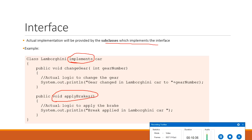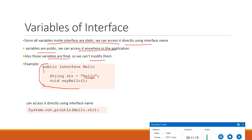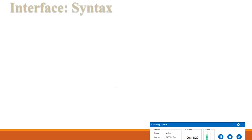Since all variables inside the interface are static, we can access them directly using the interface name. If we want to access the variable 'hello', it can be referenced just by the interface name. Variables are public so they can be accessed anywhere in the application, and since they are final, we cannot change their value. For example, with interface Hello, we access its variable as Hello.str.